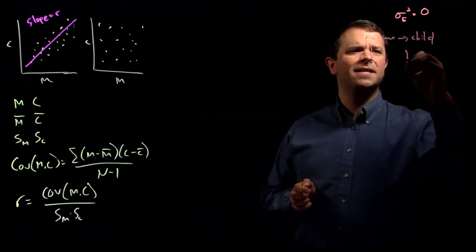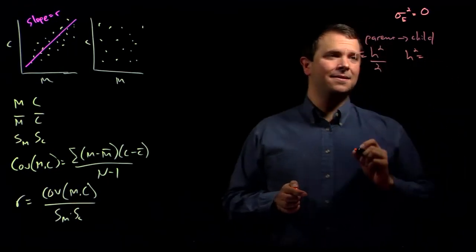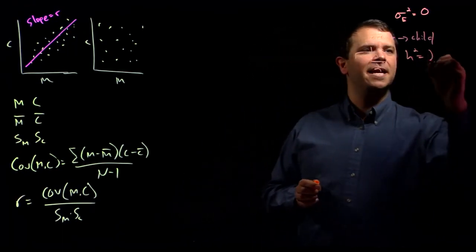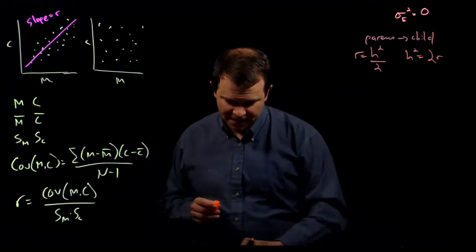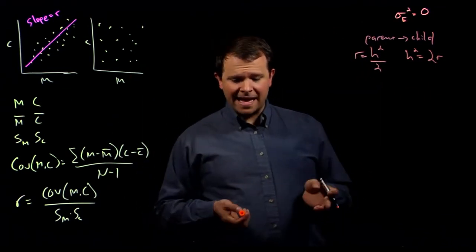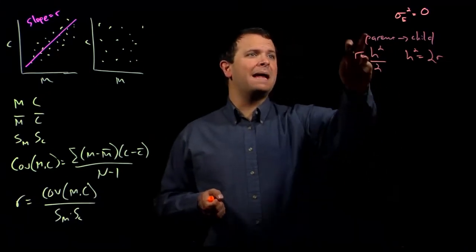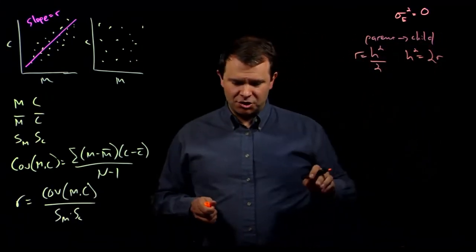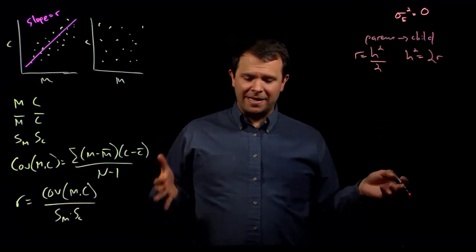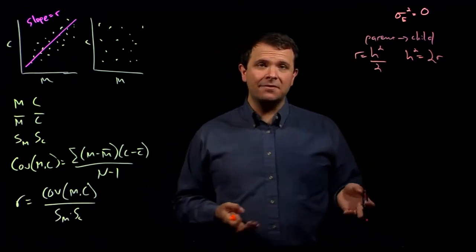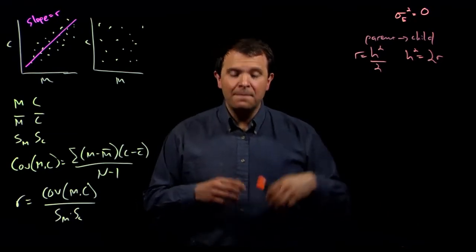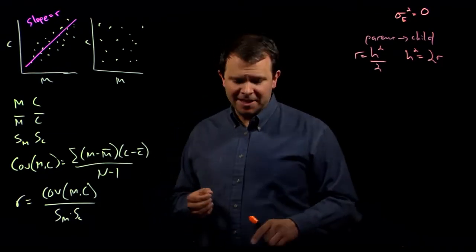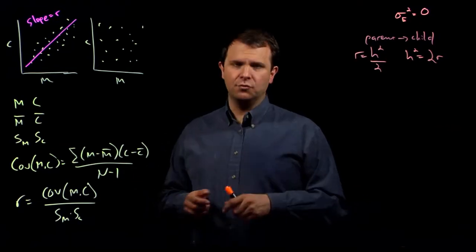Or, of course, you could rearrange this and say that the total narrow sense heritability is twice the correlation that you found. Again, this is for a parent and child relationship. Correlations between half siblings, first cousins, etc. can also be used to estimate h squared based on the proportion of alleles that are shared between those individuals.